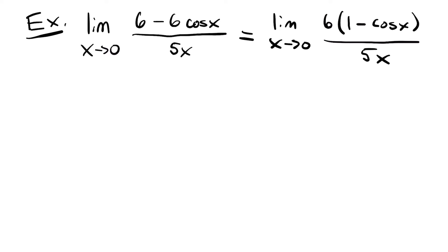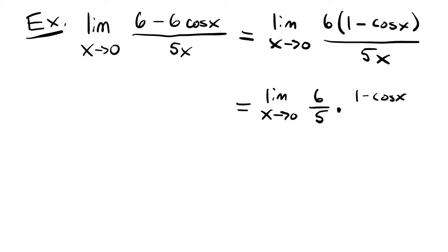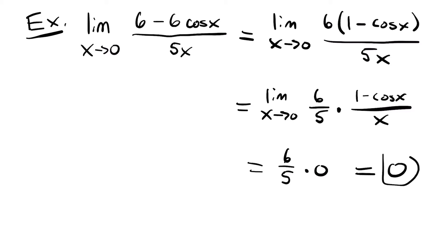Now that we've taken out that 6, I can actually see our special limit right in front of us — 1 minus cosine x over x. Just like with the last problem where we had 2 ninths to pull out, in this case we have 6 fifths that we can pull out. So this is going to be equal to the limit as x approaches 0 of 6 fifths times 1 minus cosine x over x. We know that this special limit is equal to 0, so we'll have 6 fifths times 0, which is going to be equal to 0.